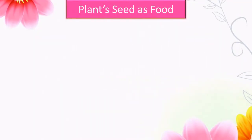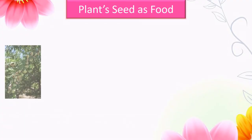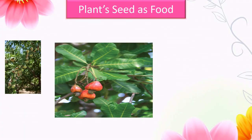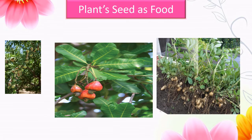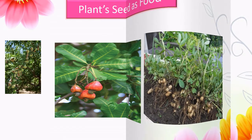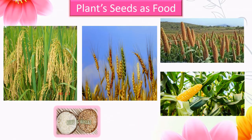Now we will see plant seeds used as food. Examples are almonds, cashews, and crown nut. We also eat rice, wheat, jowar, bajra, and corn as seeds.